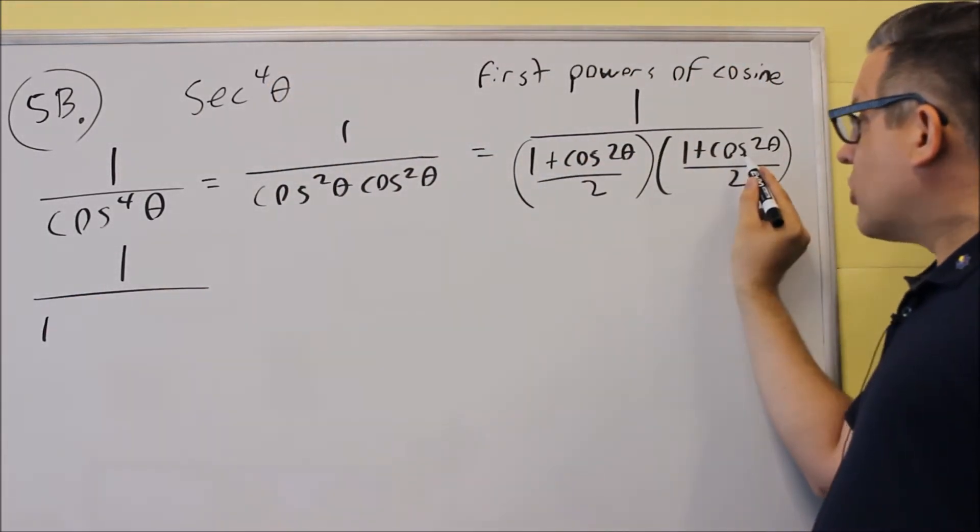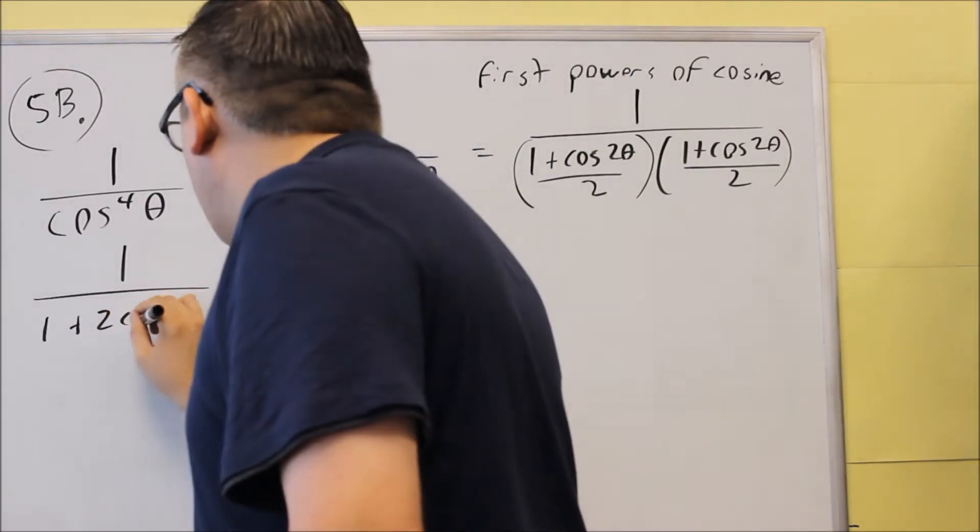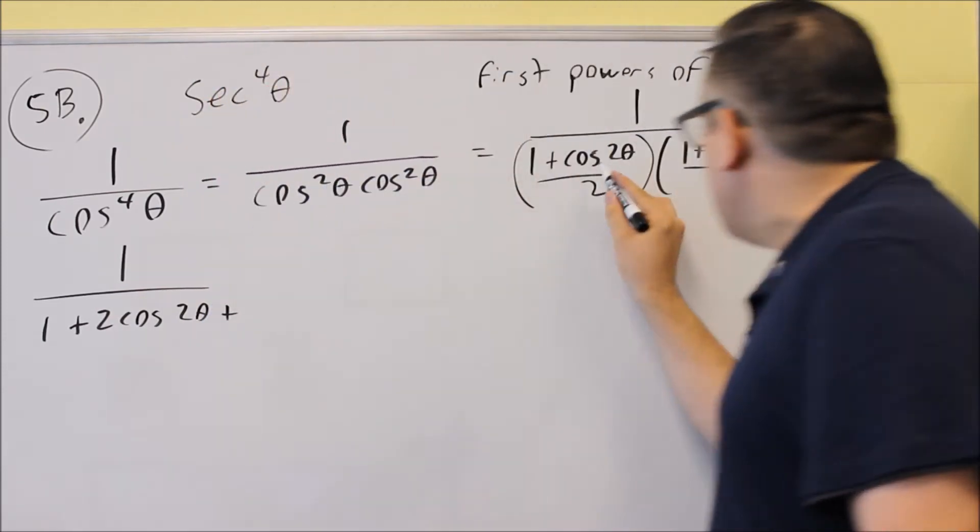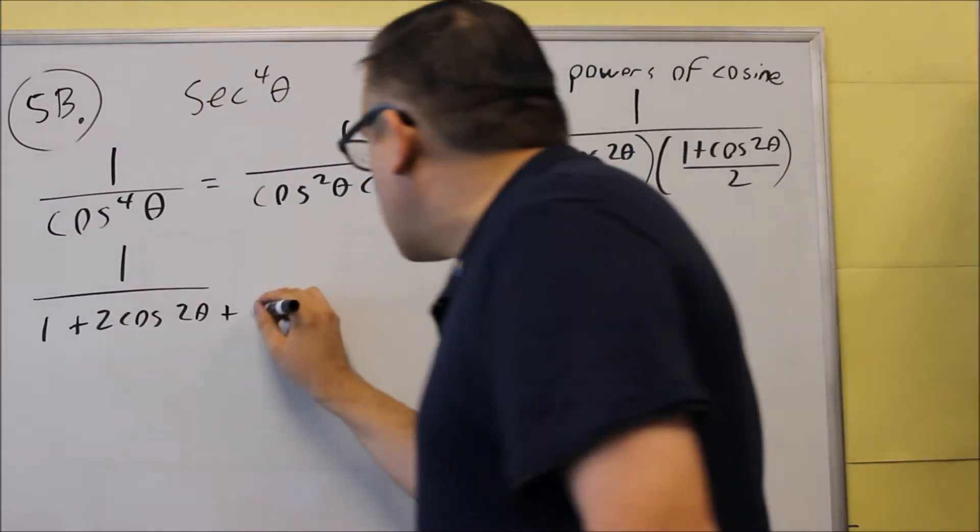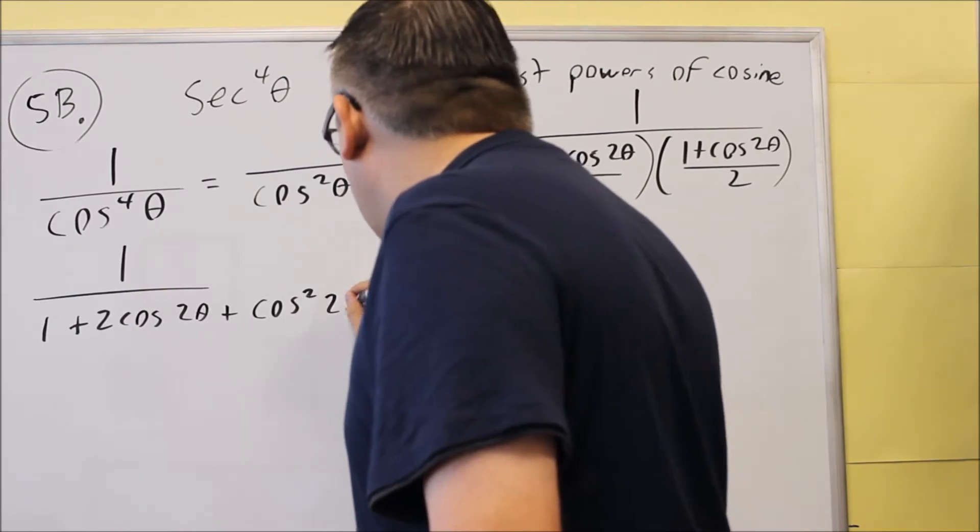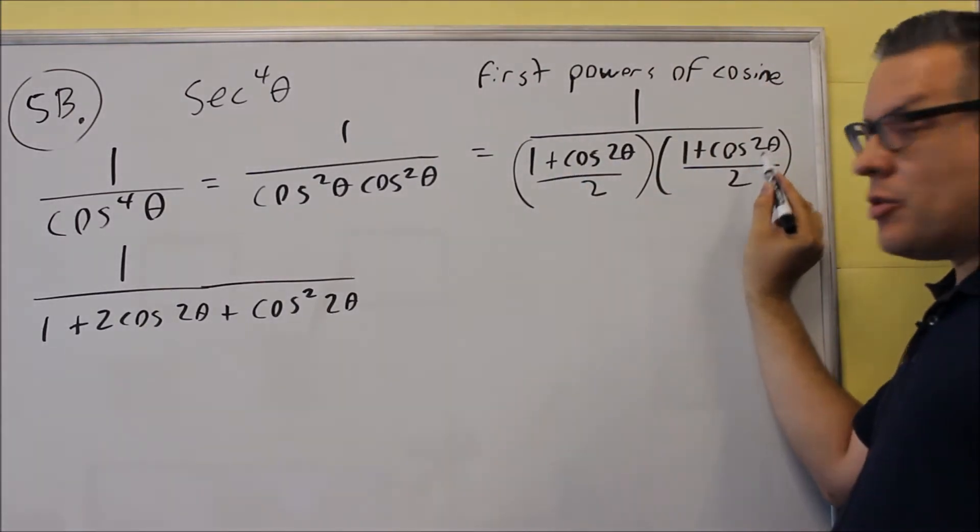You have a cosine 2 theta and another cosine 2 theta. That's going to be 2 cosine 2 theta. And then, on the end, you get a plus cosine squared of 2 theta.